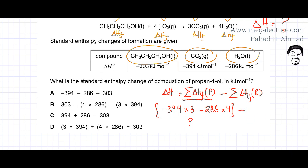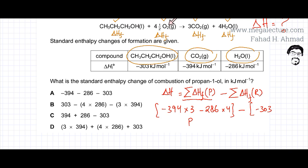Now subtract the enthalpy of formation of reactants. Propane-1-ol is minus 303, and there is only one of it, so it's minus 303. The other reactant is O2, which is 0 — as discussed, for elements the enthalpy of formation is always 0. So that is the enthalpy of formation of my reactants.